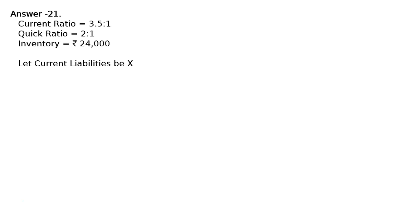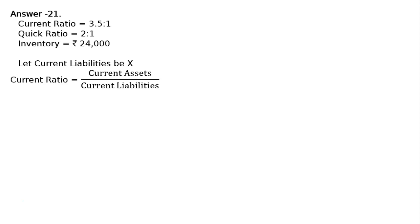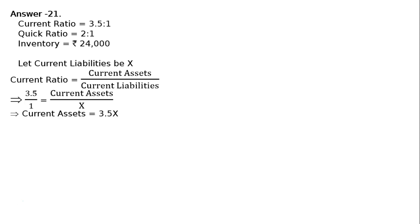Let current liabilities be X. The current ratio formula is current assets upon current liabilities. That is, 3.5 upon 1 is equal to current assets upon X. Hence, current assets is equal to 3.5X.